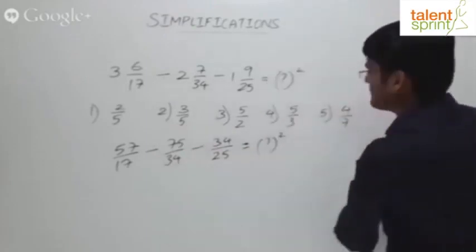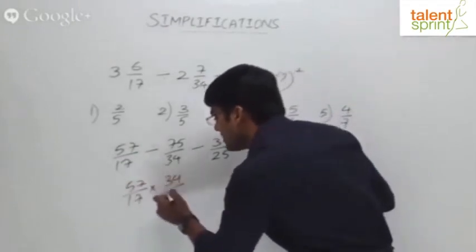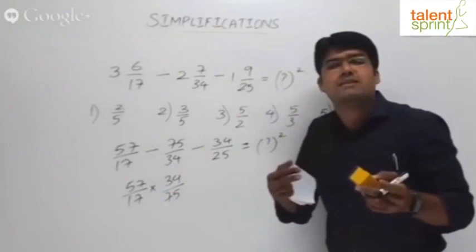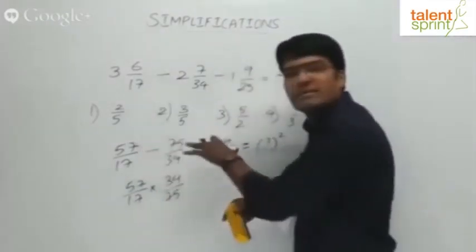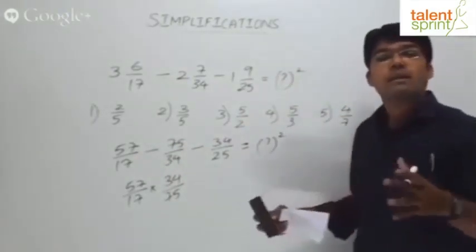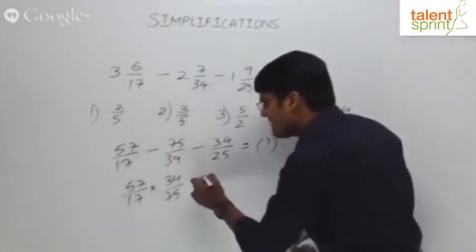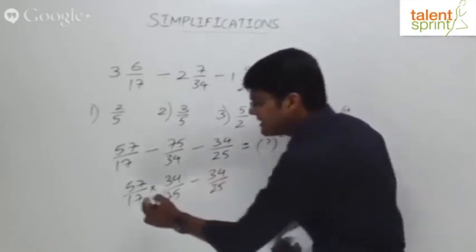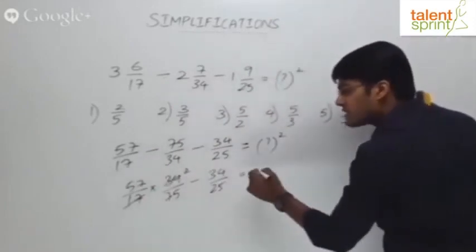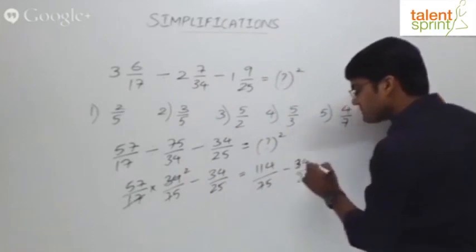Applying this: 57/17 divided by 75/34 becomes 57/17 multiplied by 34/75. Now, 34 divided by 17 is 2, so this simplifies to 57×2 by 75, which is 114/75. So the expression becomes 114/75 minus 34/25.